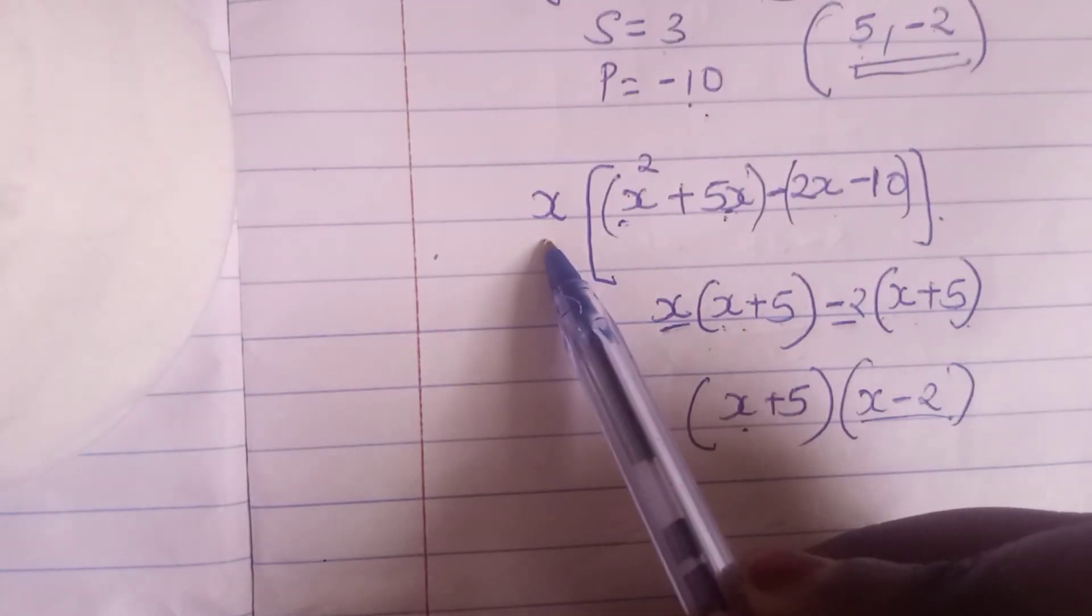Remember we had an x that was outside the bracket. So I will place it in this bracket. So this will be x into x plus 5 into x minus 2. This is our numerator. We have already solved it.